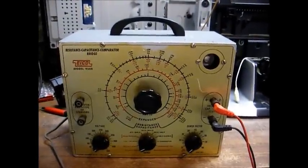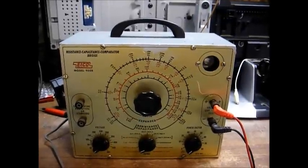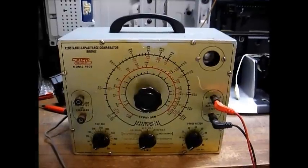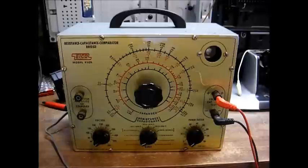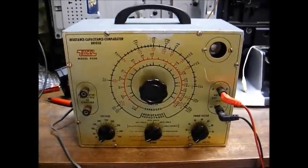Here's an IKO model 950B resistance capacitance comparator bridge. The main use for this instrument is for checking capacitors. It can also check resistors and inductors.